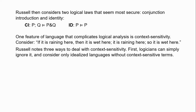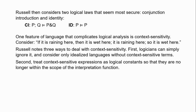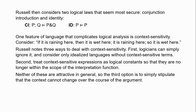But of course, isn't this a bit silly? It's not technically an equivocation because the meaning of 'here' doesn't change, but because it's being used by different people the reference changes. Russell says there are three ways logicians tend to deal with context-sensitivity. First, they can just ignore it and deal with idealised languages without context-sensitive expressions. Second, they can treat context-sensitive expressions as logical constants so they're no longer within the scope of the interpretation function. Both of these are formal manoeuvres, not really applicable to everyday arguments given how widespread context-sensitive expressions are in natural language.